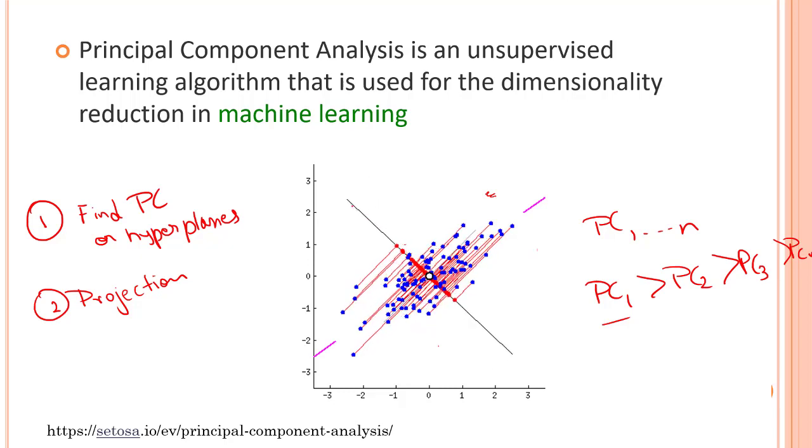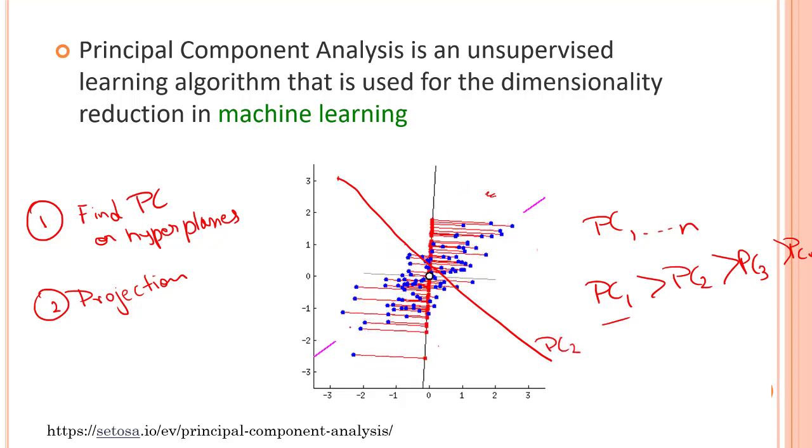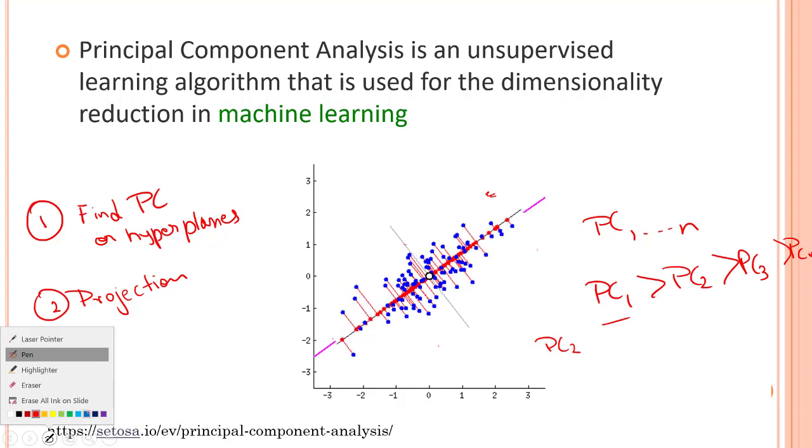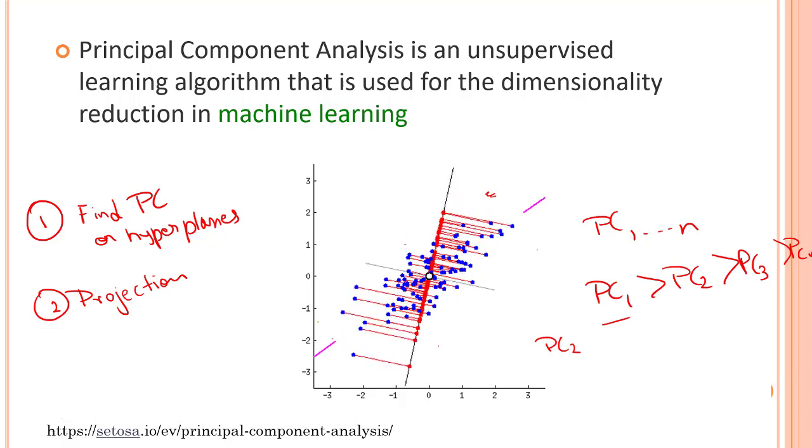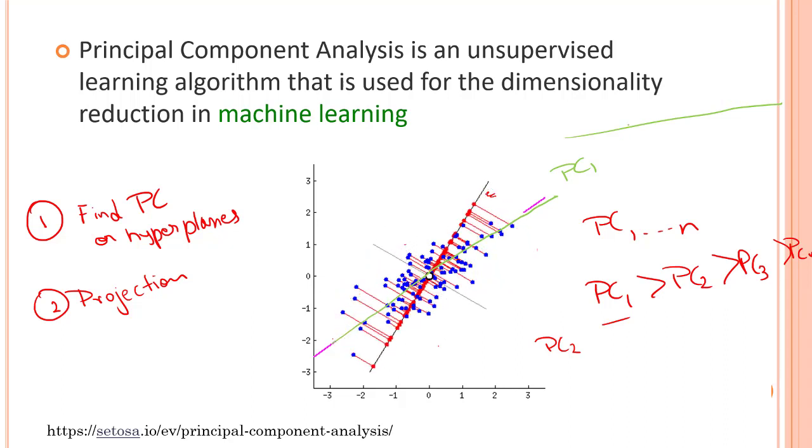Right now you can see when our line was something like this, it was having so less information. But as you see when we are somewhere over here, let's say this is PC2 or something. Let me remove everything and change the colors to make more sense. This line over here, this straight line, if I get this straight line, it will be having PC1.